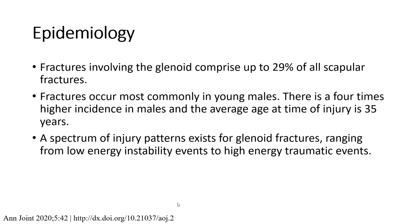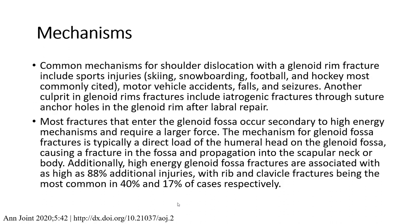A spectrum of injury patterns exists for glenoid fracture, ranging from low-energy instability events to high-energy traumatic events. Common mechanisms for shoulder dislocation with a glenoid fracture include sport injuries like skiing, snowboarding, football, and hockey, more commonly cited, as well as motor vehicle accidents, falls, and seizures.